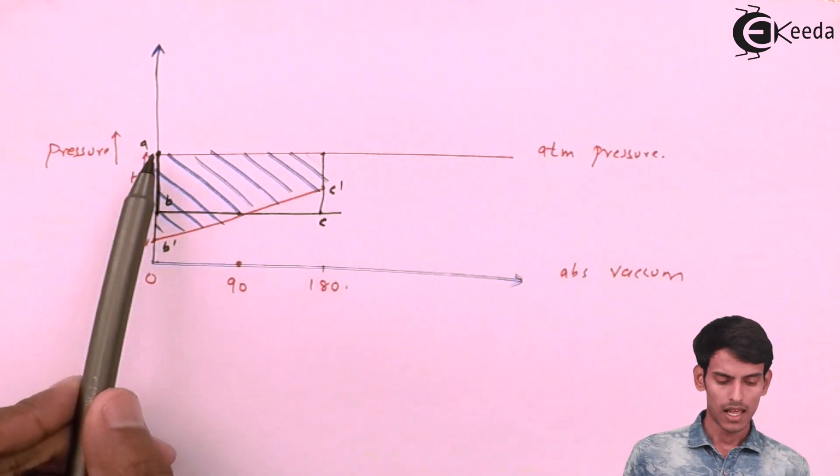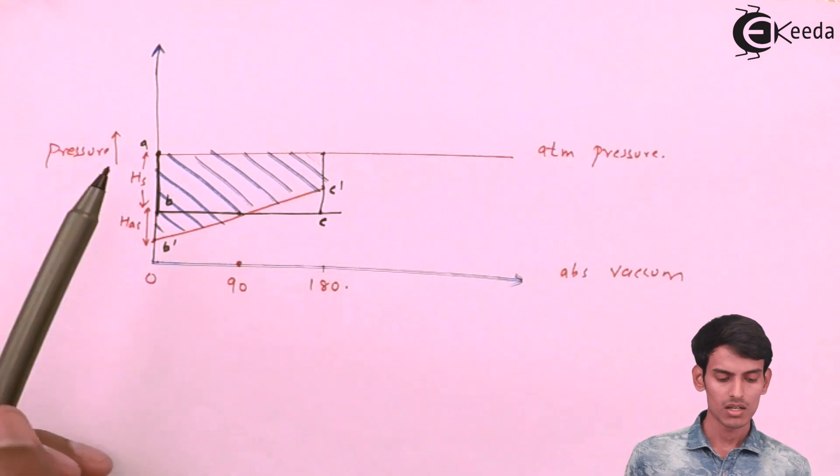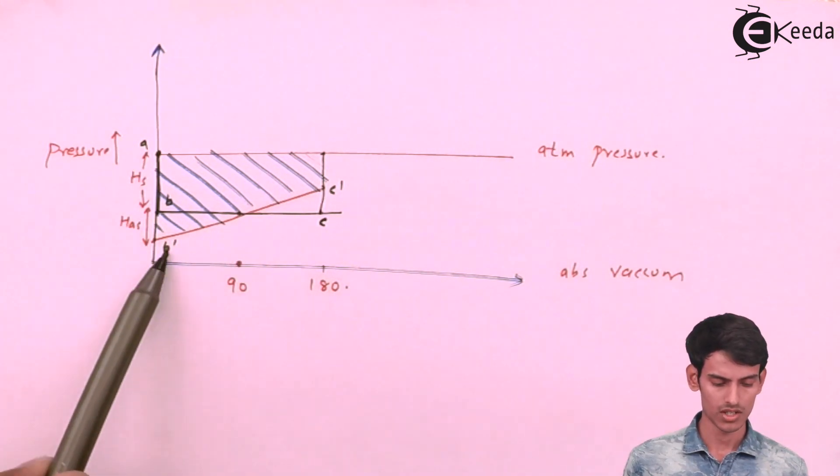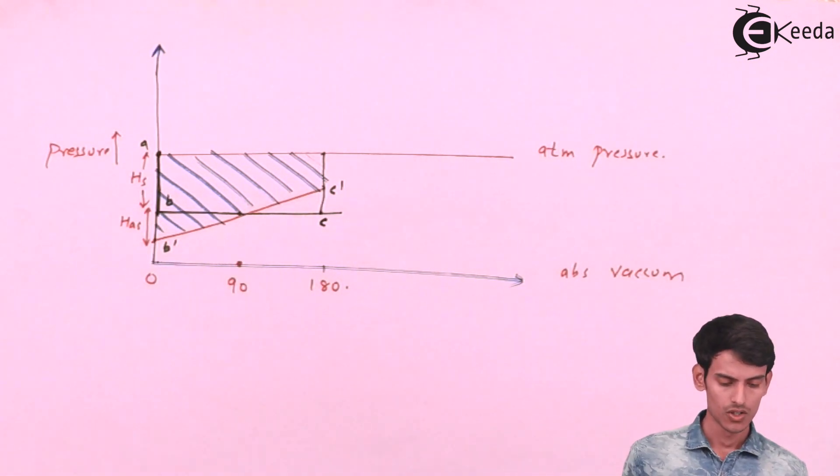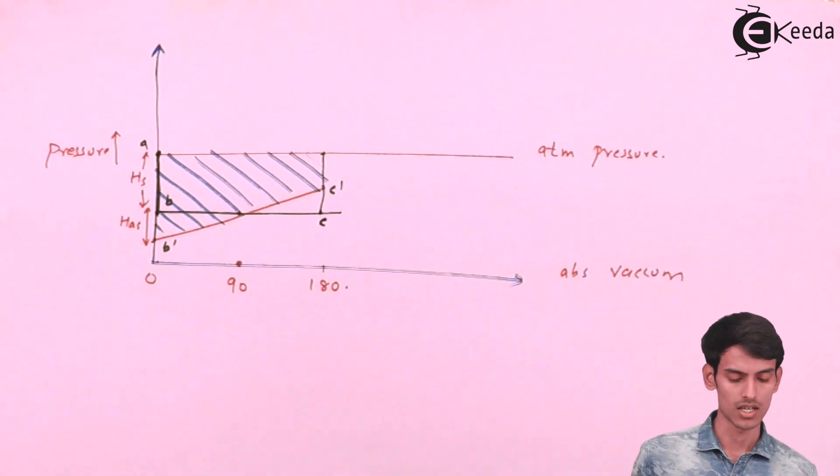So, earlier the diagram was the black line that I've drawn, now the diagram becomes a trapezium, as you can see here, the shaded region. So, this is the indicator diagram at the suction end.